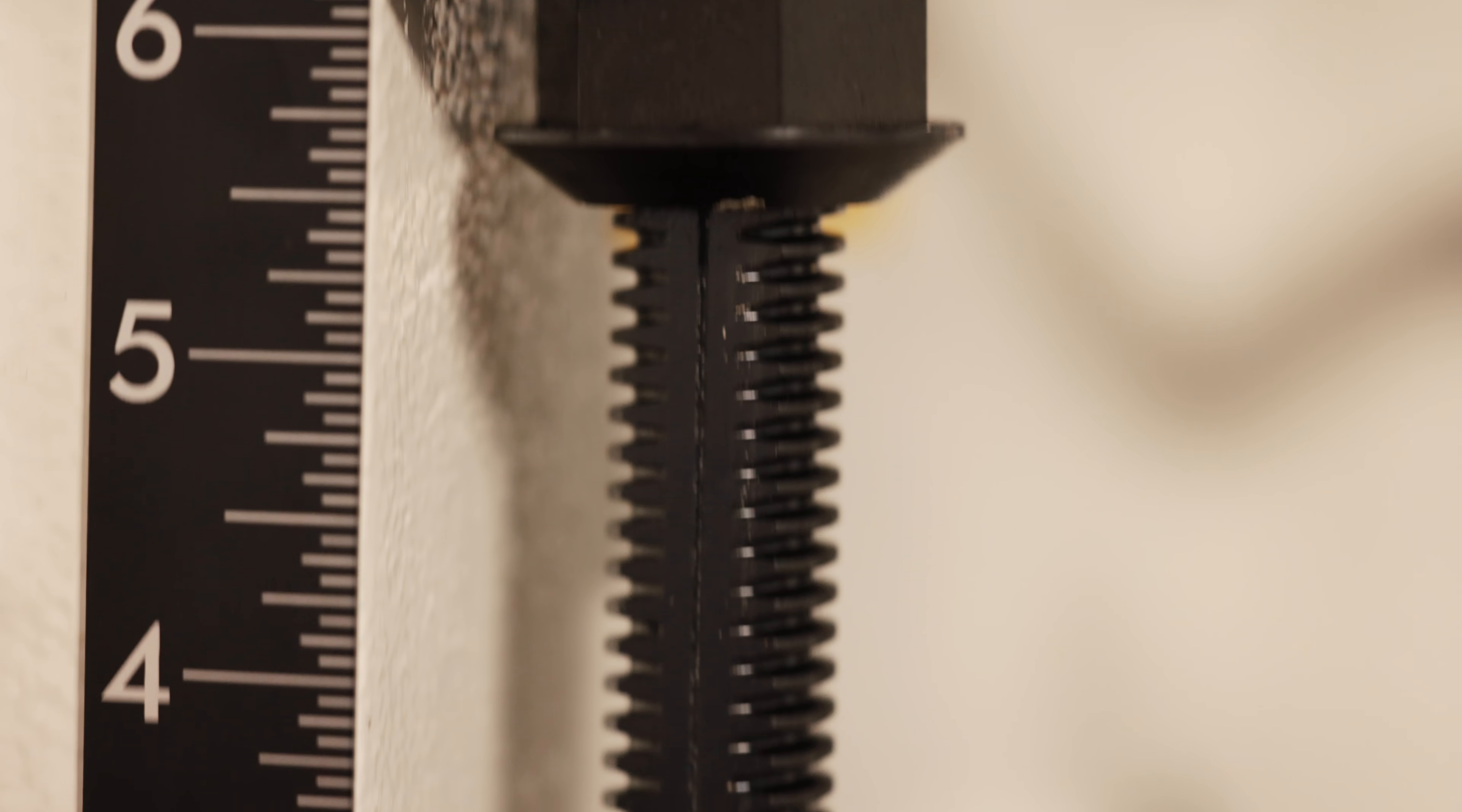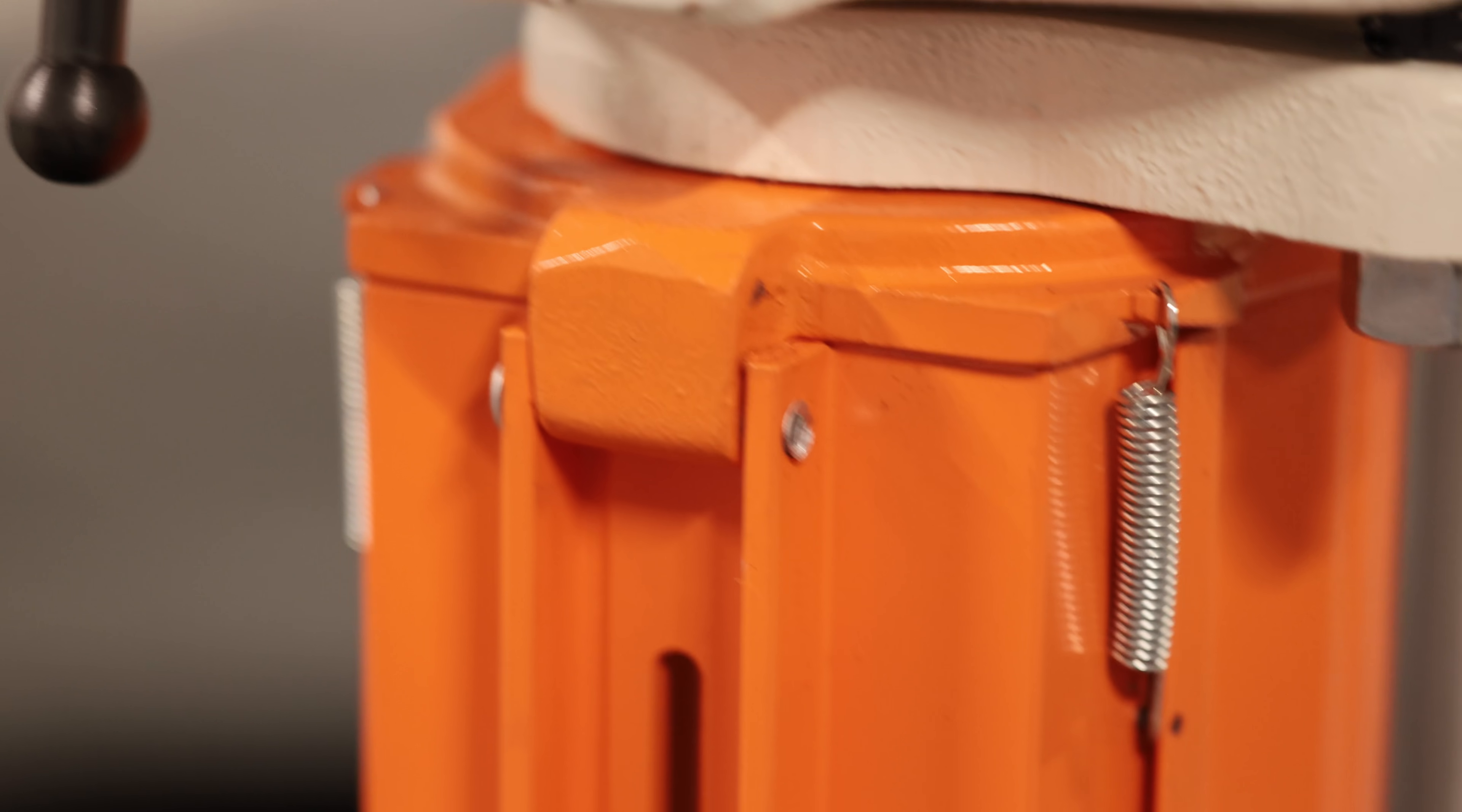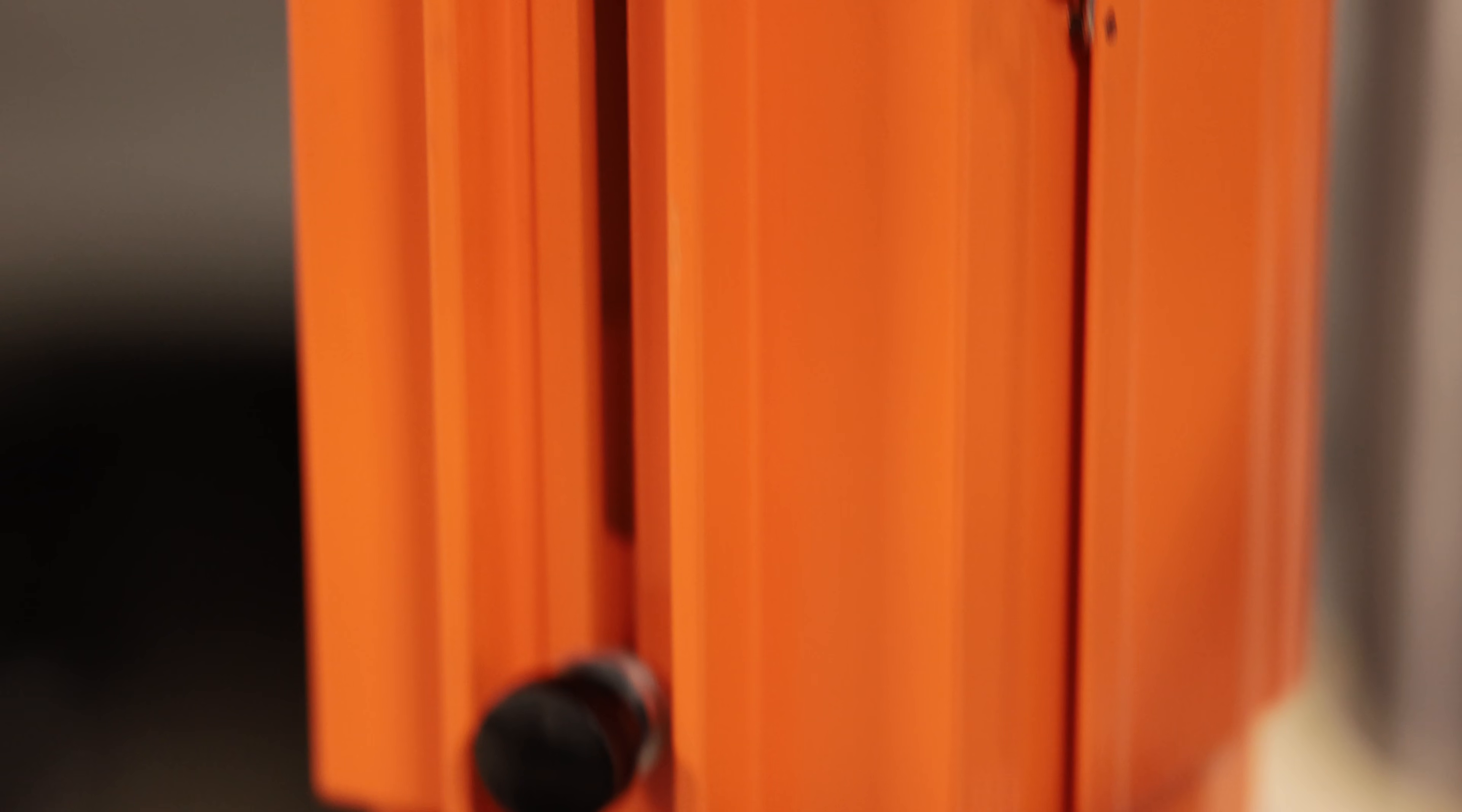This is the thread adjustable depth stop. The quill has six and a half inches of travel. Here's the quill lock. Here's a telescopic spindle guard.